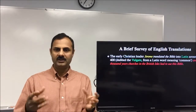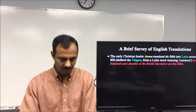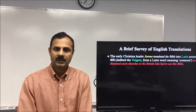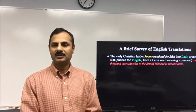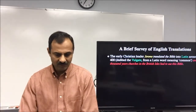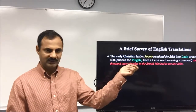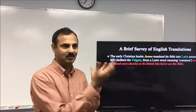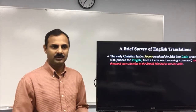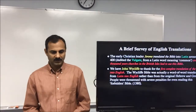We have the original Hebrew and Greek — and a few passages in Aramaic. The early Christian leader Jerome translated the Bible into Latin around 400 AD. Until that point, we only had the Greek and Hebrew manuscripts. Around 400 AD, Jerome translated the Bible into Latin — called the Latin Vulgate — which became the authoritative Bible used for the next thousand years. For a thousand years, churches in the British Isles had to use this Bible.